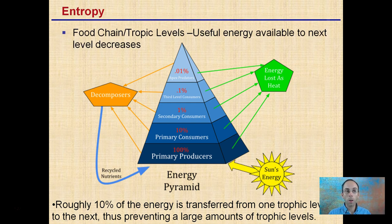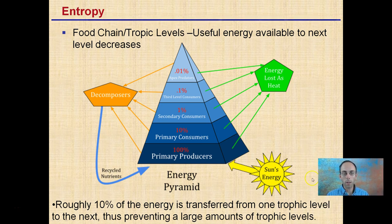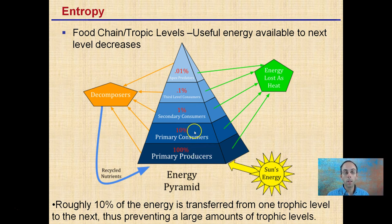Referring entropy to the food chain and trophic levels: the useful energy available to the next level decreases. We have our sun's energy involved with our primary producers, which is 100% of the energy. As we work from primary producers to primary consumers up our trophic levels, roughly 10% of the energy is transferred from one trophic level to the next — we're simply moving the decimal by 10. This is why our apex predators are so few and far between, while our primary producers are very prevalent. The sun's energy and recycled nutrients are the main sources of energy in our pyramid.